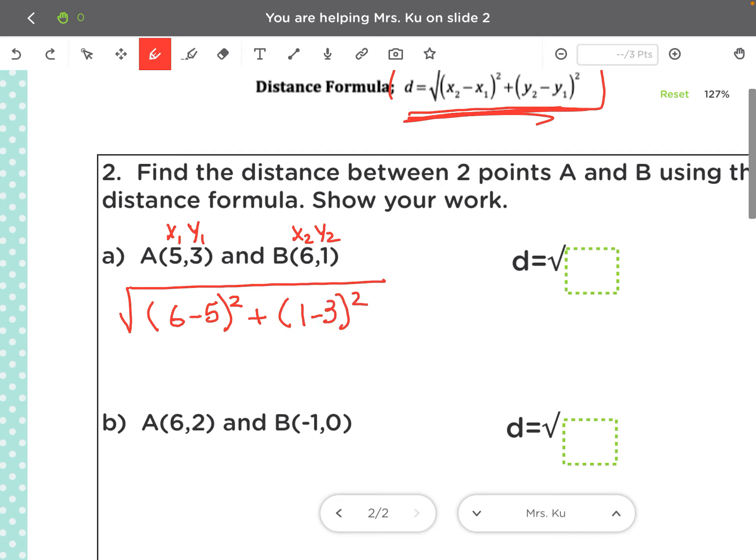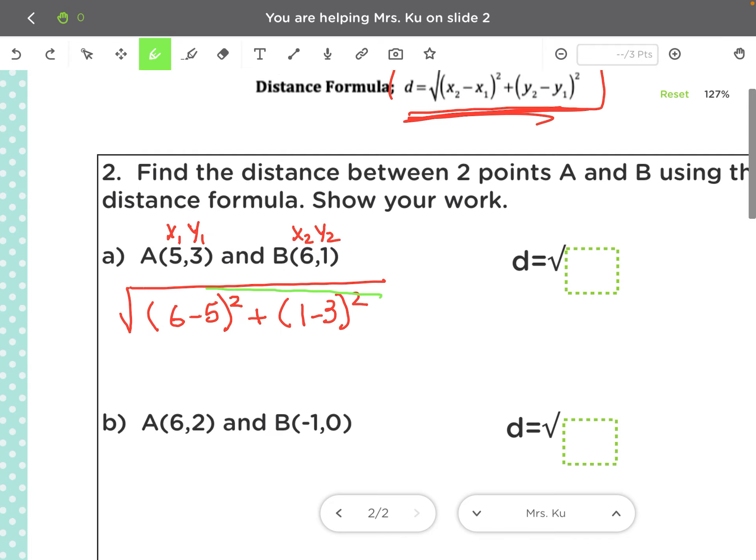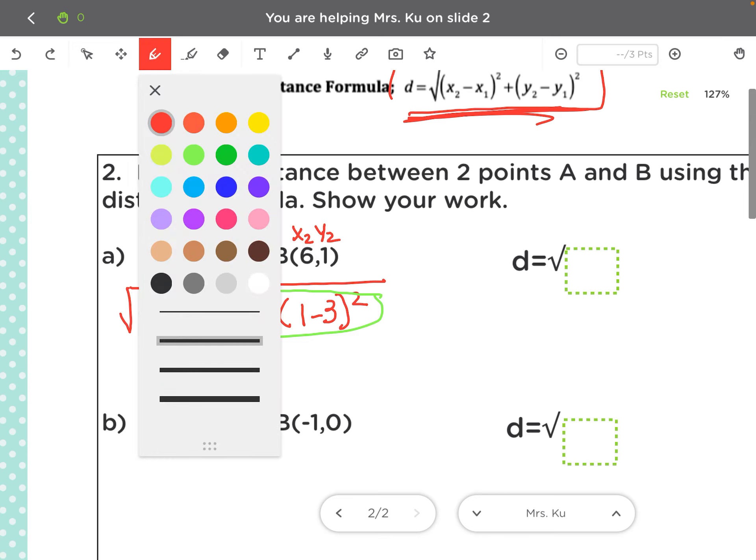And then remember, once you get to here, you're going to go ahead and type this whole thing into your calculator exactly the way you see it. And if you do that, you're going to get 5 for that number.